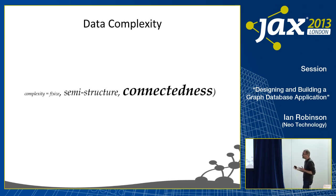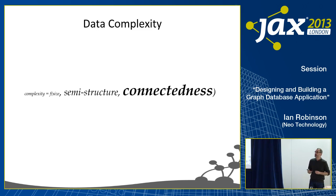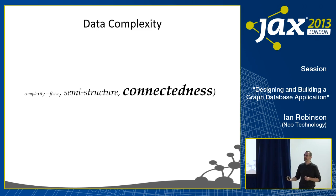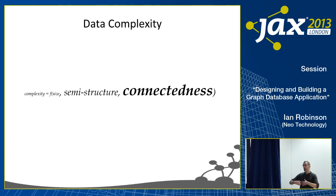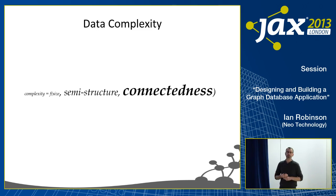First, I'll talk about the motivation for this technology — why use a graph database? It's really all about data complexity. The data that we're using today is probably more complex than ever before. For me, that complexity is a function of three things: an increase in size, an increase in semi-structure where data is becoming more variably structured and doesn't all fit into a uniform one-size-fits-all relational schema.